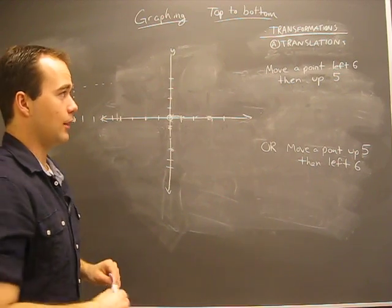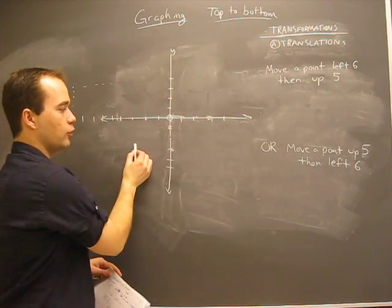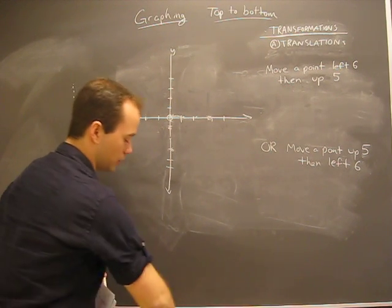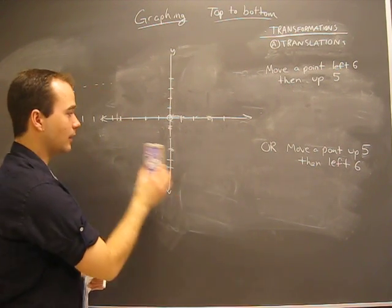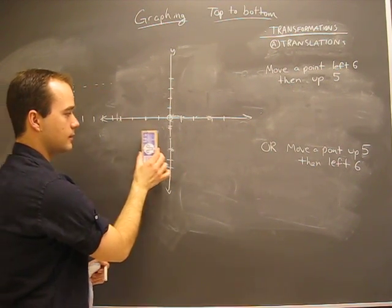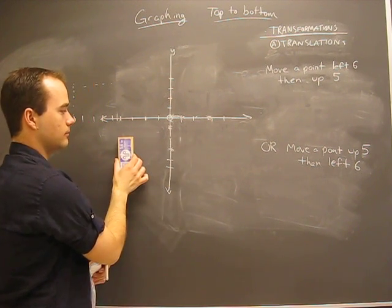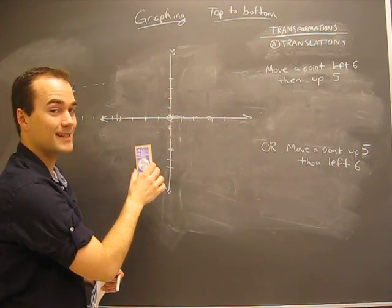And we're going to do more than one. Now a translation again is when we move something from here to here. The shape looks the same. So if we have this rectangle we would go from here to there. That's a transformation, that is a translation.